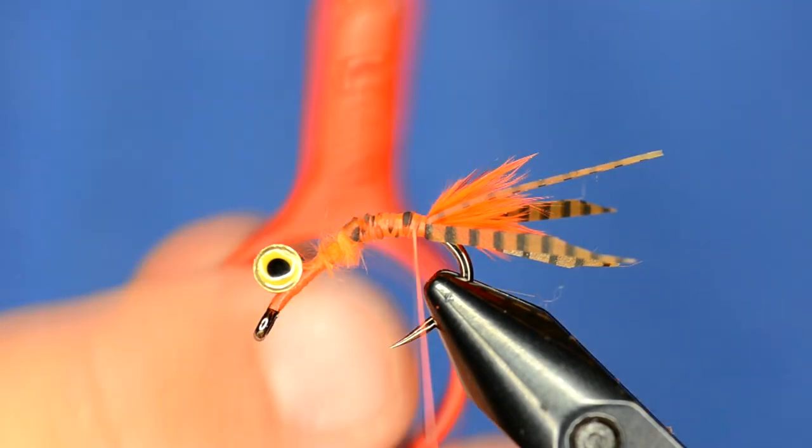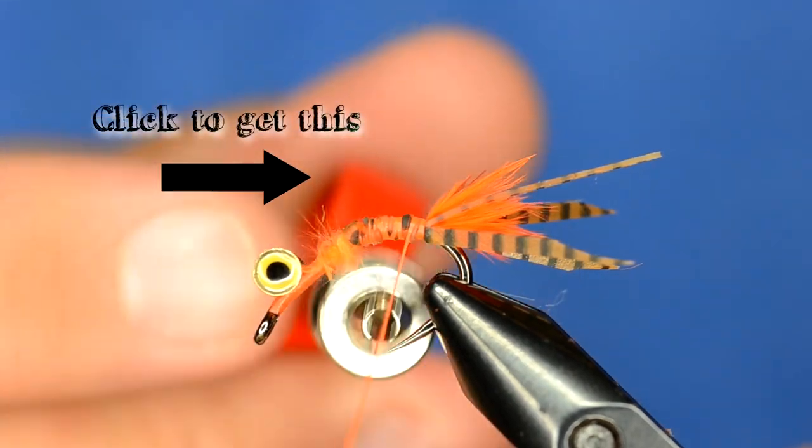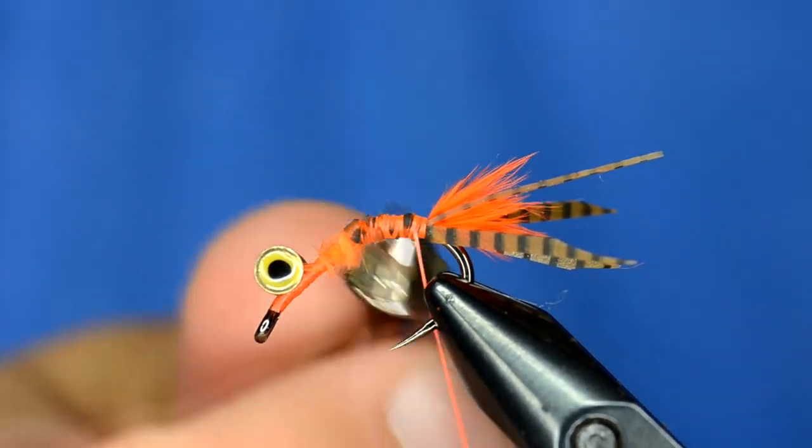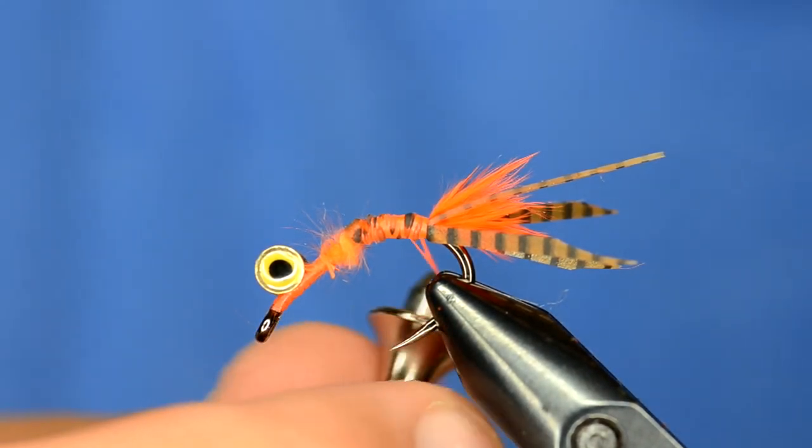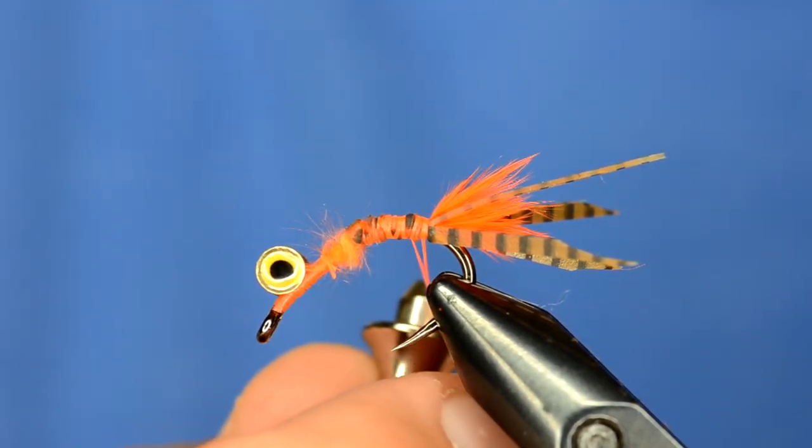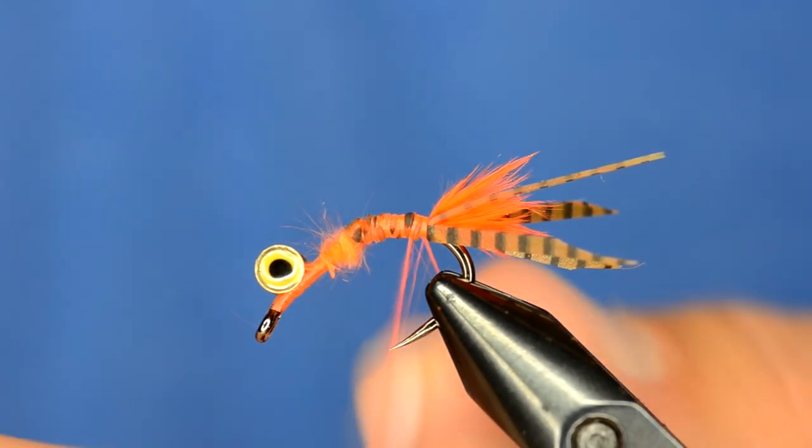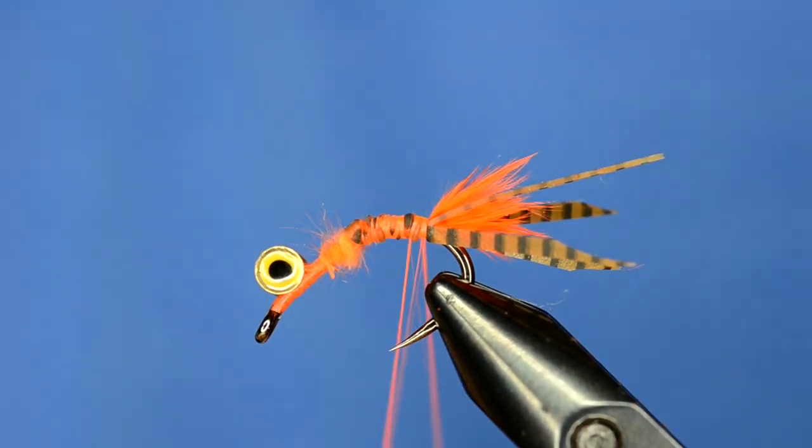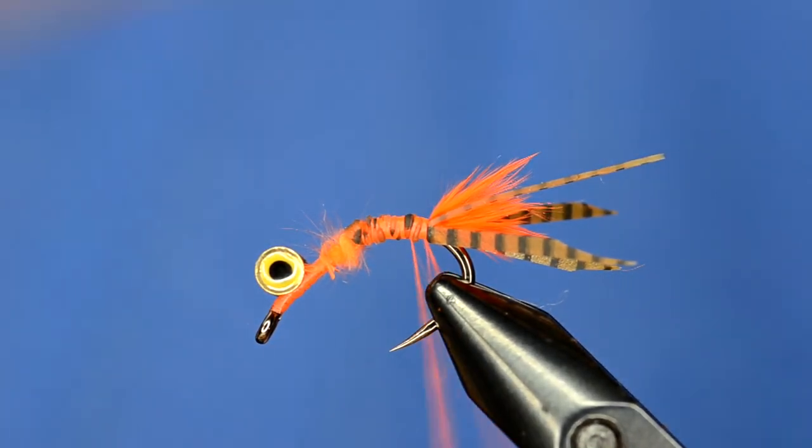So I'm going to use a Stonfo thread splitter. You may have seen these before but essentially you just stick your thread in this slot, poke a needle through and it splits your thread. Okay so I'm going to take it and if you rub it up and down like that it'll kind of flatten out your thread a little bit before you use the splitter.